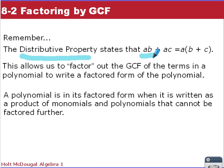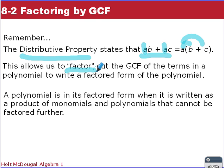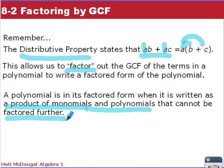Remember the distributive property states: a times (b + c) equals a times b plus a times c — each term has a factor of a, and we can factor it out. This allows us to factor out the greatest common factor from the terms in a polynomial to write a factored form. A polynomial is in its factored form when it's written as a product of monomials and polynomials that cannot be factored any further — they have no common factors within them.